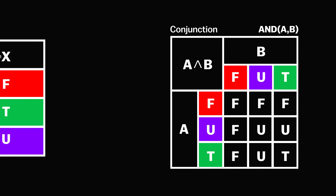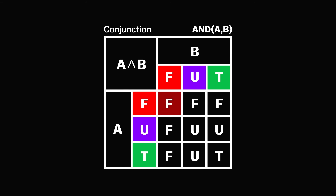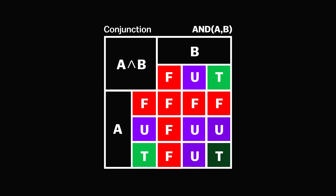Conjunction, also known as the AND operator, is trickier. It follows a truth table, but it makes more sense if we use the balanced ternary representation and think of AND as the minimum function.